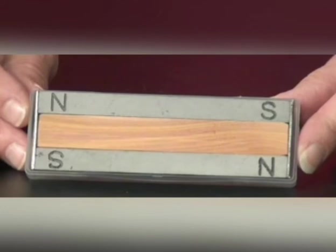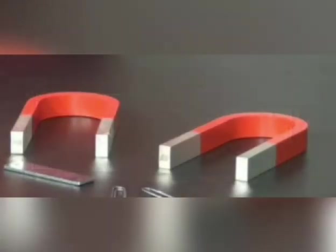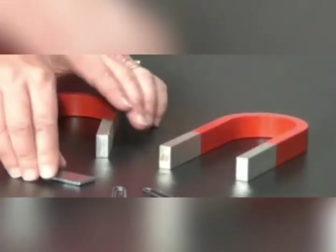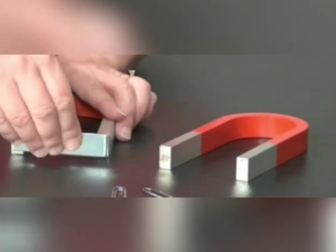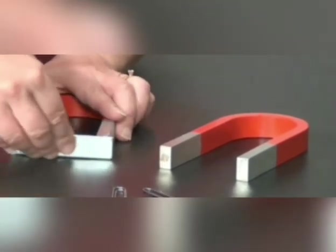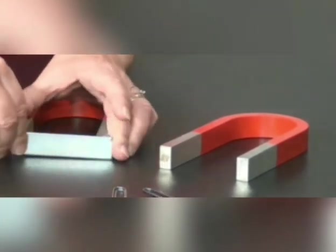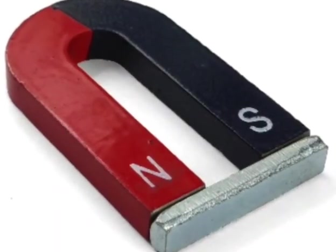Thus, the proper storing of bar magnets in pairs by separating them with a piece of wood and keeping soft iron bars across their opposite ends prevents the loss of their magnetism. The horseshoe magnets or U-shaped magnets are stored properly just by keeping a bar of soft iron across their ends.